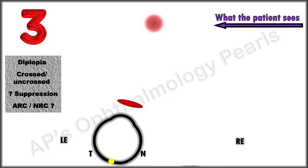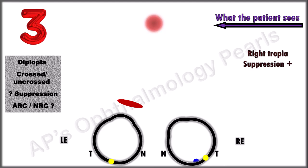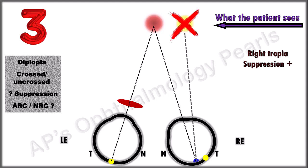Scenario 3. Diplopia is absent. This is not a fusion response. Only a bright red light is seen. So yes, suppression is present. So this is a case of tropia with suppression. The type of deviation cannot be inferred from this particular pattern, but it would have already been determined by the cover test.